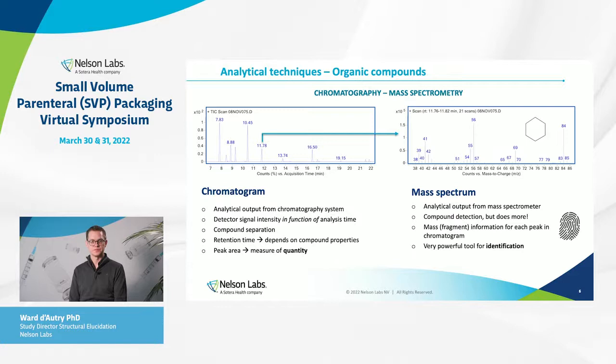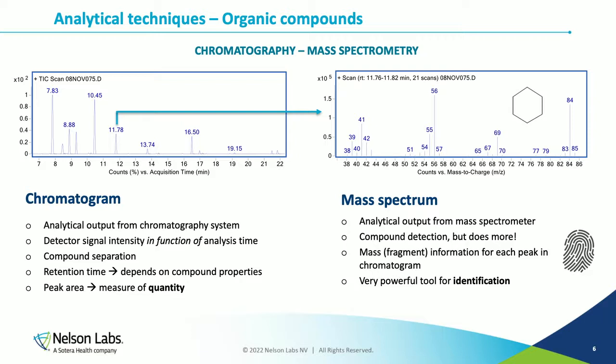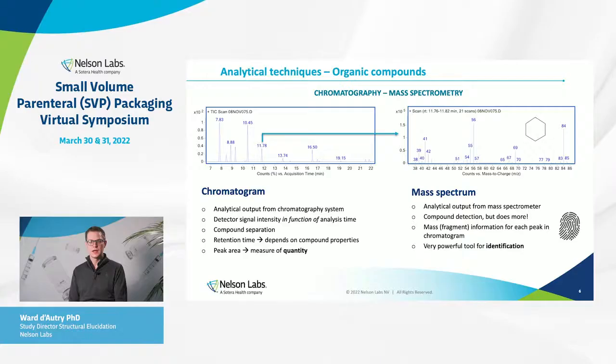After every peak in the chromatogram there is a mass spectrum. A mass spectrum is the analytical output of the mass spectrometer — it detects the compound and provides mass information for each peak. Such a mass spectrum looks like a fingerprint, making it a very powerful tool for identification.